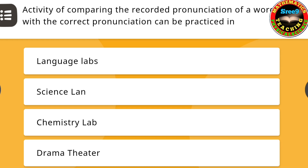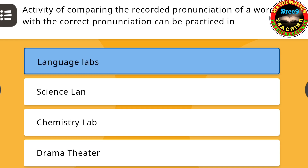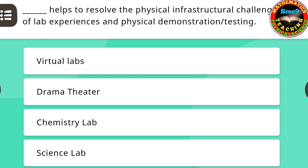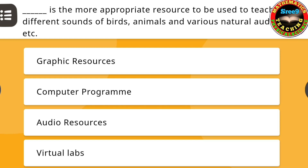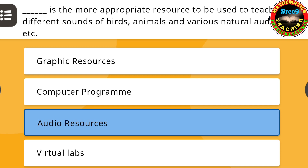Next question: Activity of comparing the recorded pronunciation of a word with the correct pronunciation can be practiced in — the correct answer is: language labs. Next question: Dash helps to resolve the physical infrastructural challenges of lab experiences and physical demonstration or testing — the correct answer is: virtual labs. Next question: Dash is the more appropriate resource to be used to teach different sounds of birds, animals, and various natural audios — the correct answer is: audio resources.